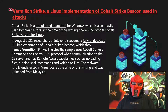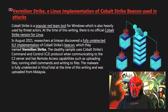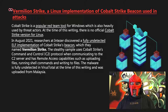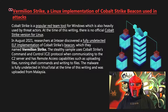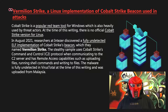In August 2021, researchers at Intezer discovered a fully undetected ELF implementation of Cobalt Strike's Beacon, which they named Vermillion Strike. The stealthy sample uses Cobalt Strike's command and control protocol when communicating to the C2 server, and has remote access capabilities such as uploading files, running shell commands, and writing to files. The malware was fully undetected in VirusTotal at the time of their research, and was uploaded from Malaysia.